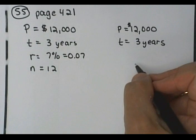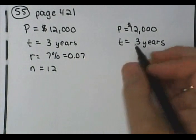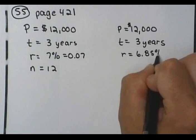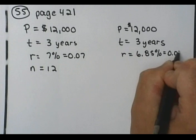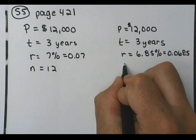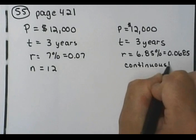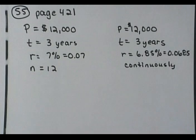Or this one over here, where it's at 6.8% and you're going to be compounding continuously.